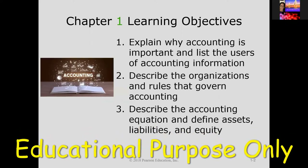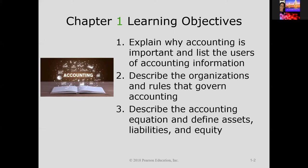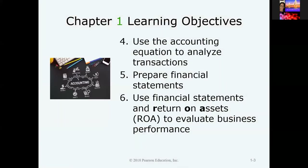We're going to go over the objectives of chapter one. The first objective is to explain why accounting is important and list the users of accounting information. Two, we're going to describe the organizations and the rules that govern accounting. Three, we're going to describe what exactly is the accounting equation and define assets, liabilities, and equity. Objective four, we're going to use the accounting equation to analyze transactions.